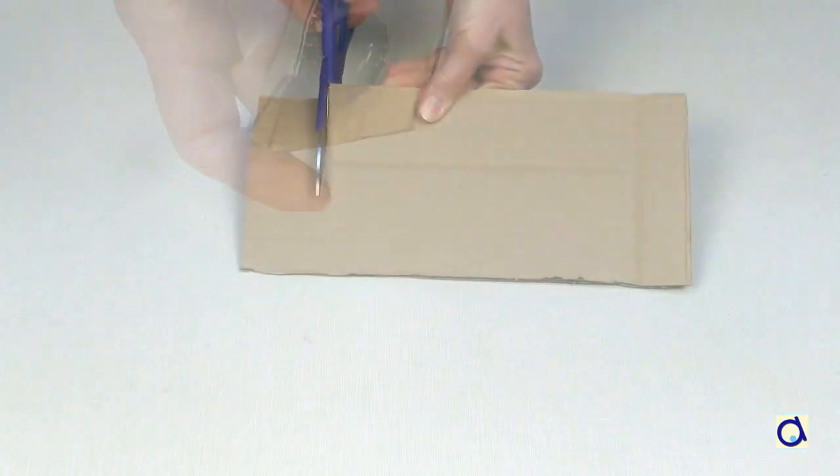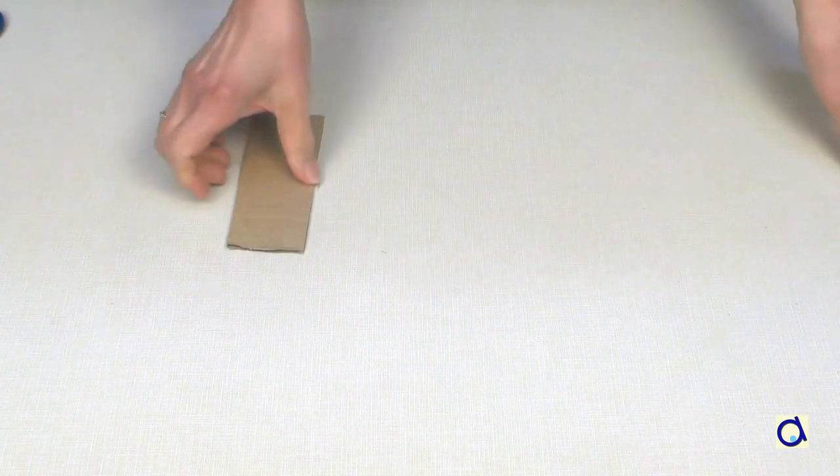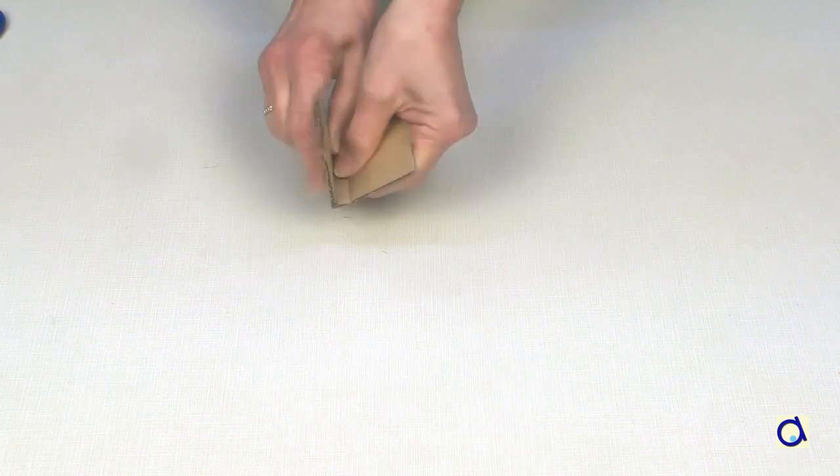Take corrugated cardboard and cut a strip of about 5 inches by 2 inches. Fold the piece of cardboard in half.